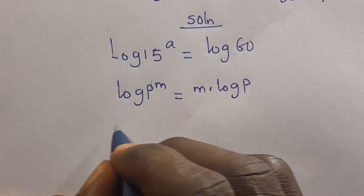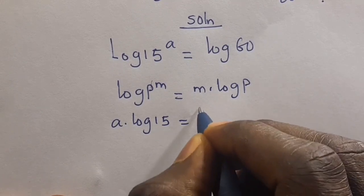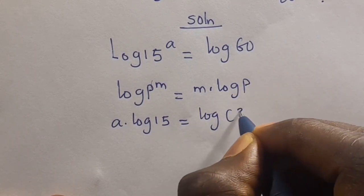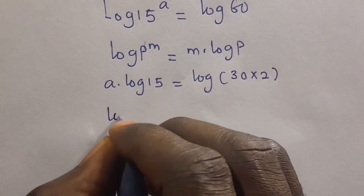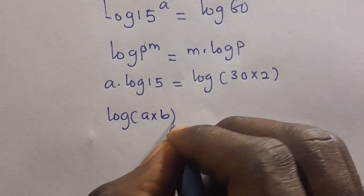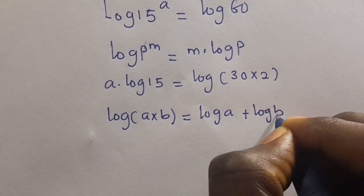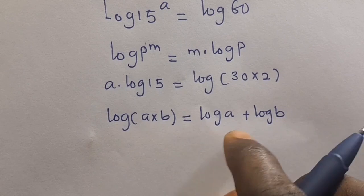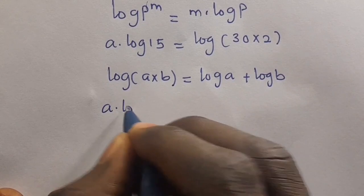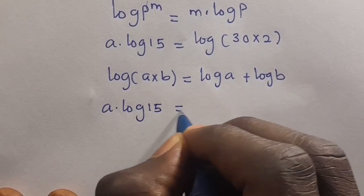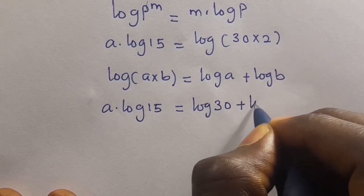So from here, we have A multiplied by log 15 equals log 60. We can write 60 as 30 times 2. We also recall that log of A times B equals log A plus log B — multiplication changes to addition. So applying it here, we have A multiplied by log 15 equals log 30 plus log 2.